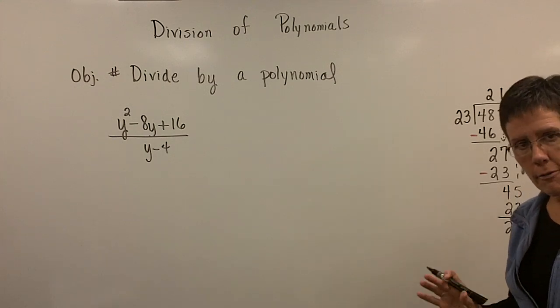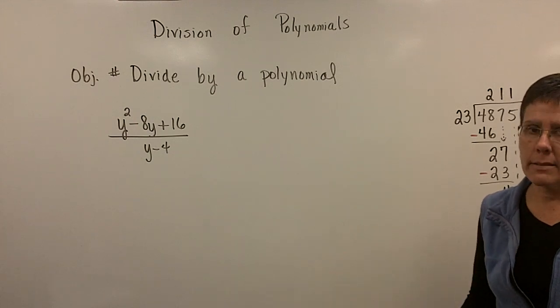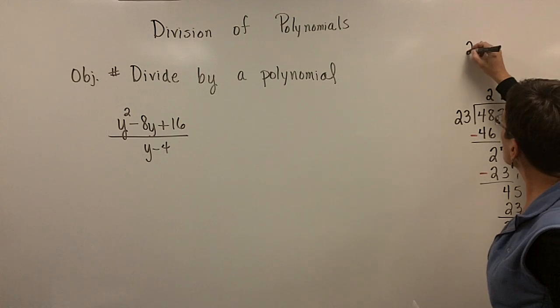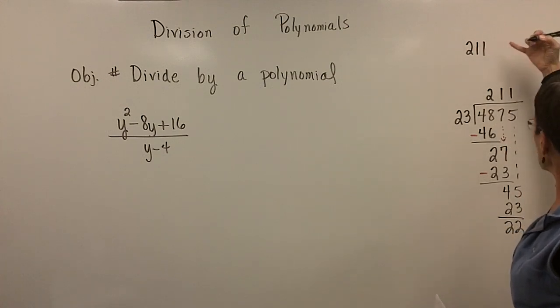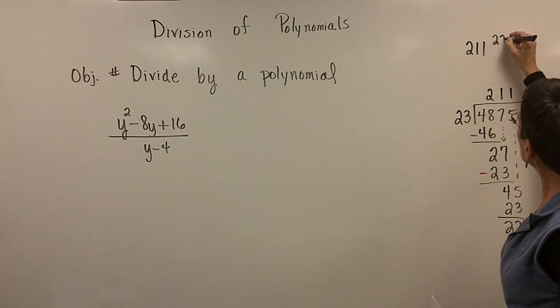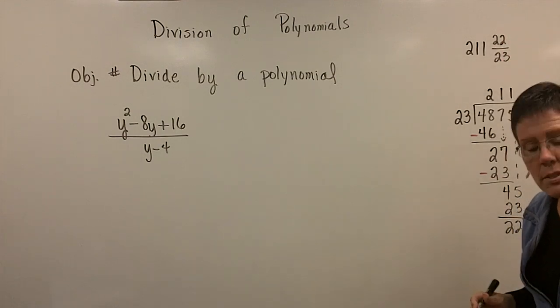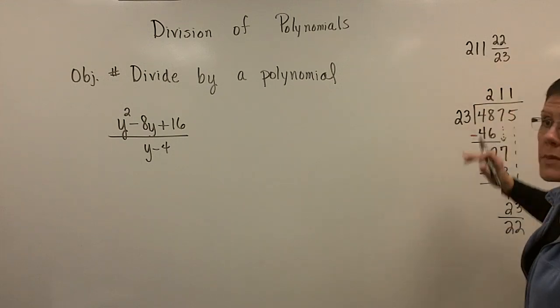And therefore I have a remainder of 22. And the way we often wrote this answer, sometimes you went on and got a decimal value. But most of the times you said that this was a mixed fraction. The answer was a mixed fraction. And it was the number 211 and 22 23rds. That was the solution to this arithmetic problem.